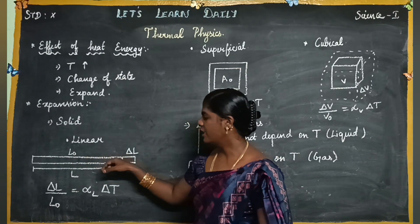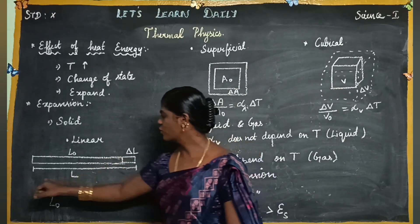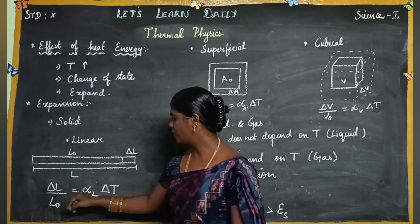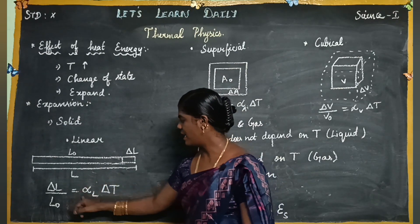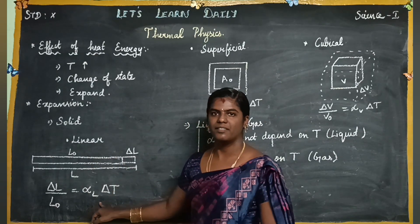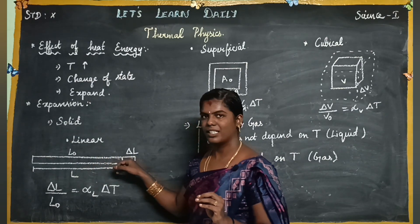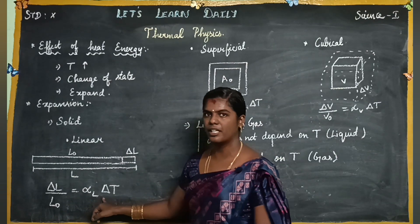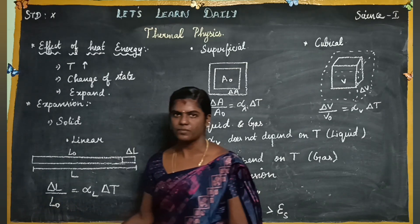Heat is applied, the temperature increases, and delta-L increases. The length is L, so delta-L divided by L-naught equals alpha-L times delta-T. Delta-T is the change in temperature. Alpha-L is the coefficient of linear expansion — that is, for a unit heat applied, that is the length increase per unit length. Delta-L is change in length divided by actual length.